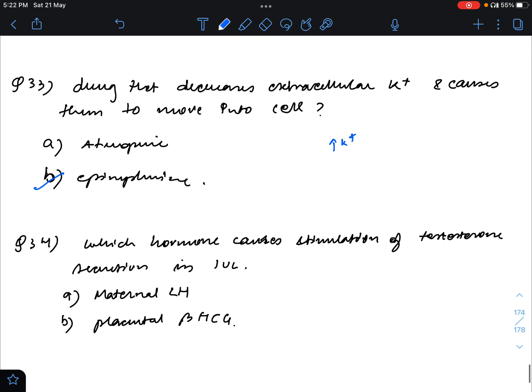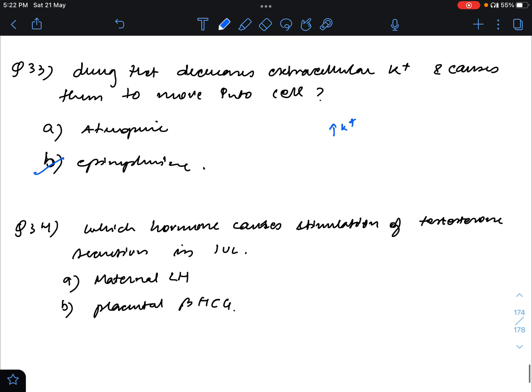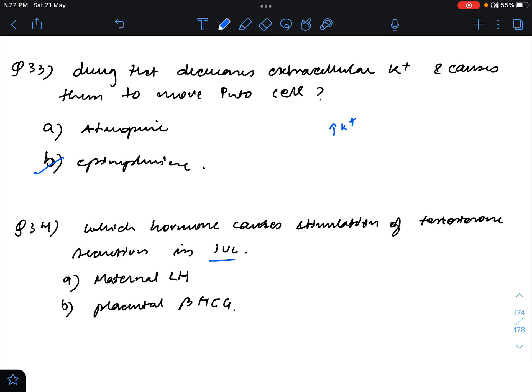Question 24: Which hormone causes stimulation of testosterone circulation in intrauterine life? In intrauterine life, the first stimulus for the increase in testosterone is placental beta HCG, it is not LH, it's placental beta HCG.